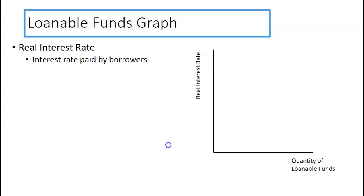So loanable funds graph, first off the axes. We have the real interest rate, that's the interest rate paid by the borrower. When you borrow money, that's the interest rate we're referring to. And the x-axis quantity loanable funds, that is the amount of funds available and desired to be borrowed.